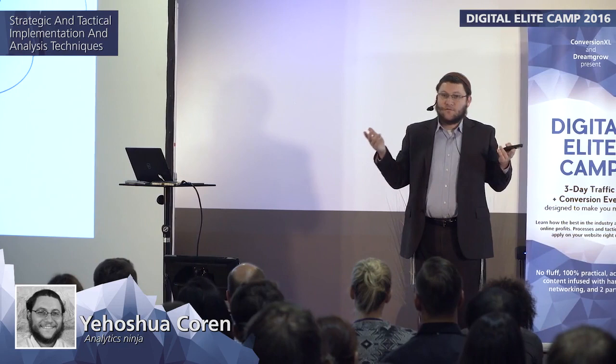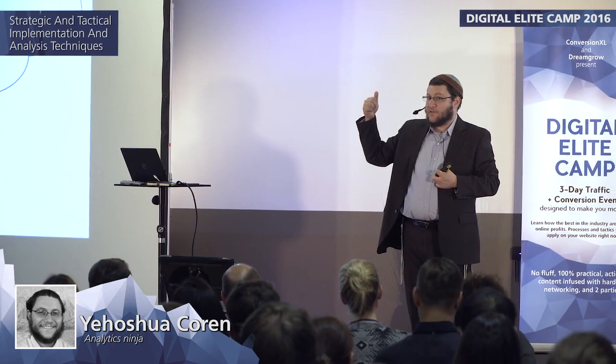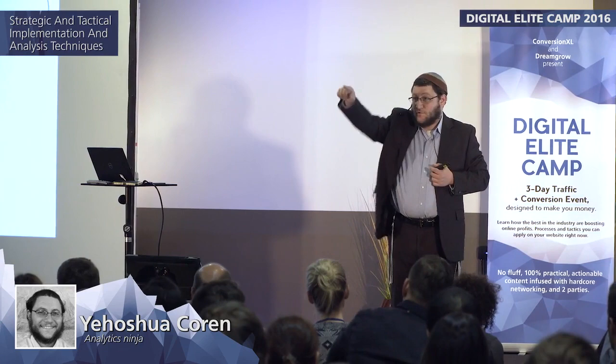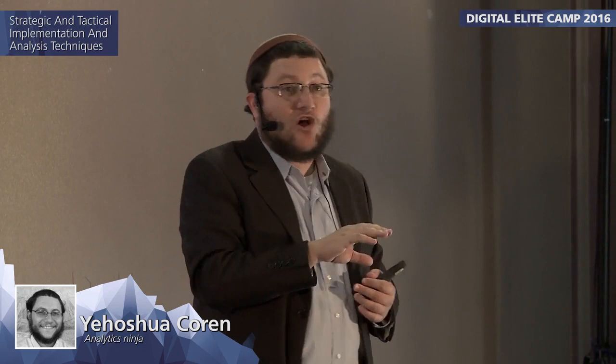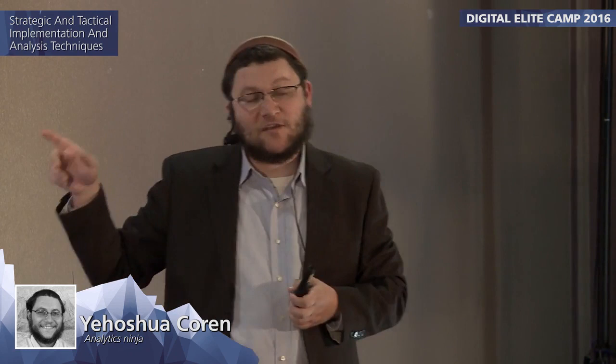Has anybody with Optimizely or VWO fired an event for an experiment name and variation? If you want to actually know did a person see a particular experiment and variation, you need to use hit-level segmentation. Otherwise you're going to say show me all people who saw this experiment and show me all people who saw control — but control is across many experiments. Hit-level segmentation answers: did the person see this experiment? Very important.